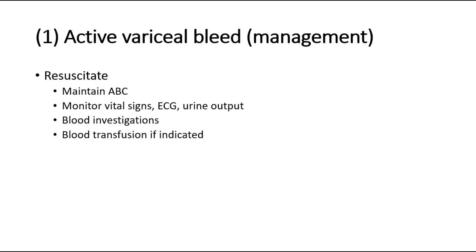Lab investigations include group and cross-matching of blood, full blood count, renal profile, coagulation profile, and others. If indicated, blood transfusion can be given — it is usually indicated if the hemoglobin is less than 7 g/dL in severe hemorrhage.